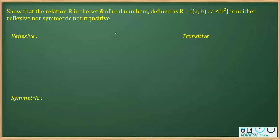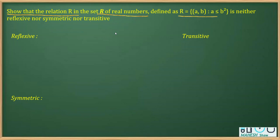In this video, I'm going to show the working of the question from the chapter on relations. The question says to show that the relation R in the set of real numbers — where the first R indicates the relation and the second R is the set of real numbers — defined as (a, b) such that a ≤ b², is neither reflexive, nor symmetric, nor transitive.